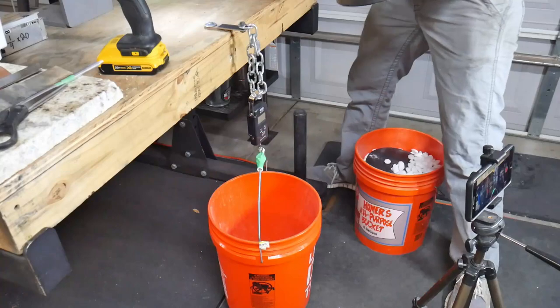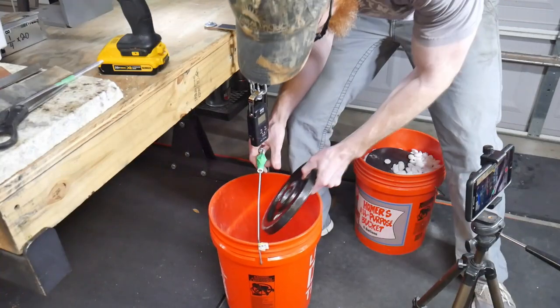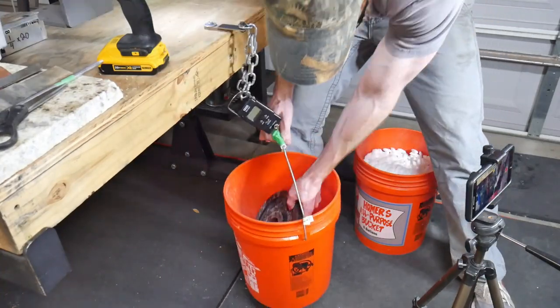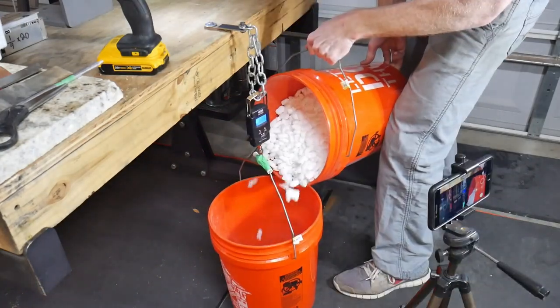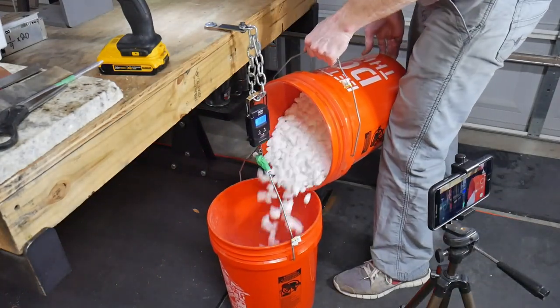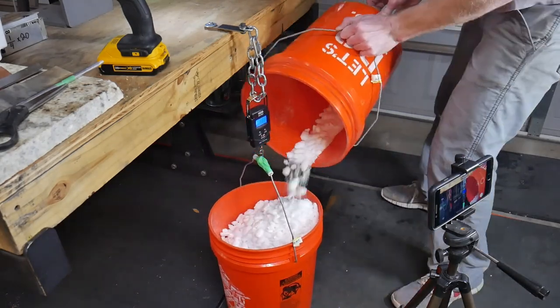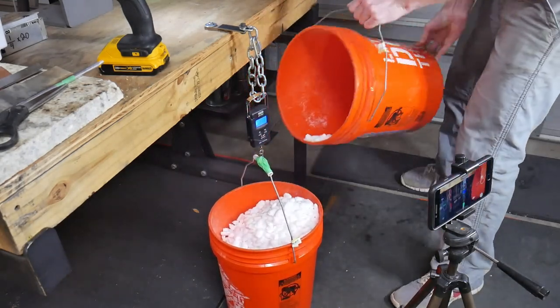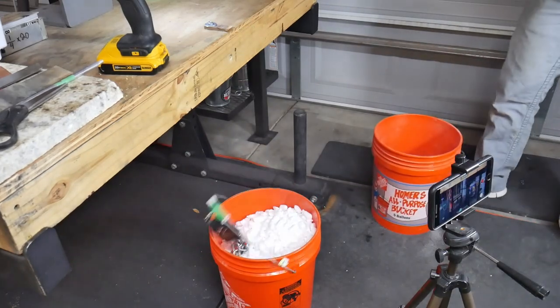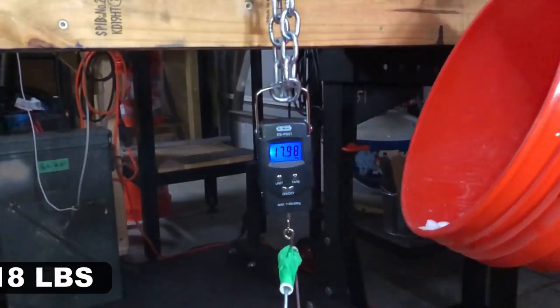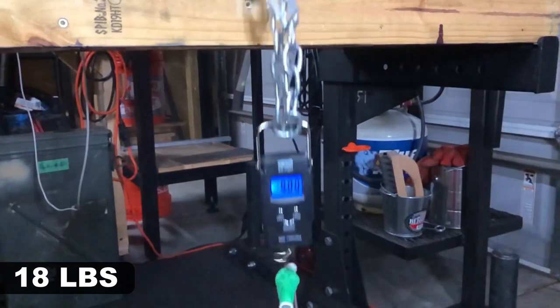Next up is the G Flex Epoxy. I go ahead and I put the 20 pounds in the bottom of the bucket and then start pouring. So we passed up the 4.9 pound mark actually getting it all the way up to around 18 pounds before it busted here. And it took a little delay to bust but it busted at about 38 pounds total.